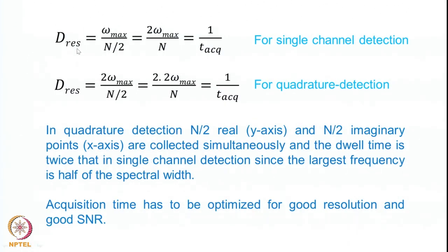Digital resolution is therefore defined as follows. In single channel detection, the spectral width equals omega max and is represented by n over 2 points, giving a digital resolution of 2 times omega max divided by n, which equals 1 over the acquisition time t_acq. In quadrature detection, the spectral width is 2 times omega max and is again represented by n over 2 real points, giving the same result: digital resolution equals 1 over t_acq. In both cases, digital resolution is inversely proportional to acquisition time, and one must optimize acquisition time for maximum signal-to-noise and maximum resolution.